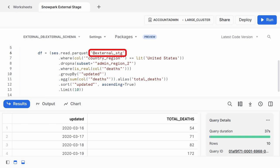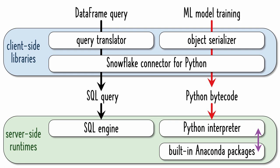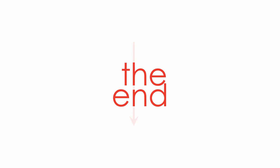Whereas Snowpark will translate your DataFrame code into SQL and run it on its database engine, code from special Python packages like ML libraries will run in a Python interpreter. I hope you understand more about the similarities between Snowpark and Spark now.